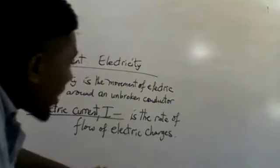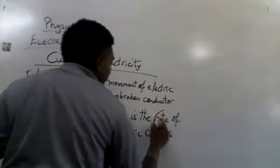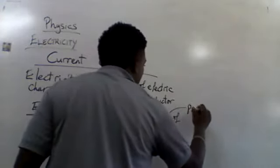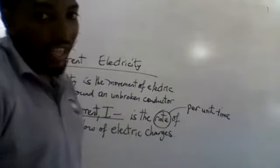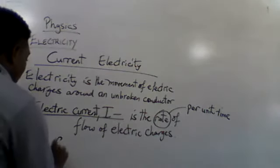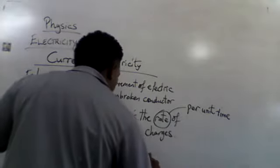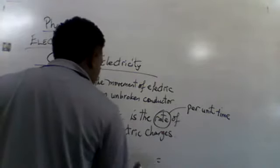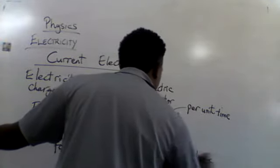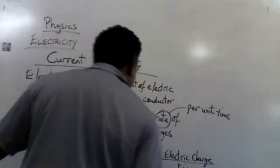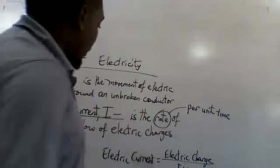Given the definition of electric current — the rate of flow of electric charges — any time you see the word 'rate,' it is referring to per unit time. So 'rate of flow of electric charge' gives us a formula: electric current I is equal to Q over T, where Q is charge and T is time. That's the general formula for electric current.